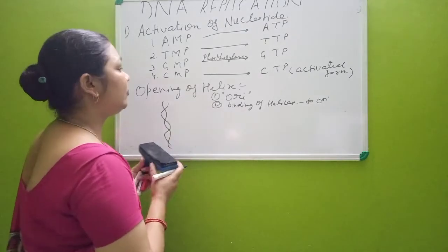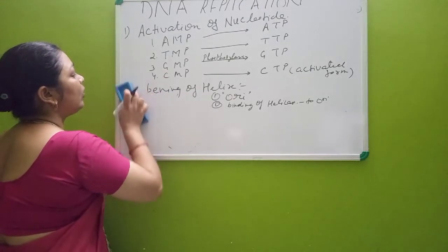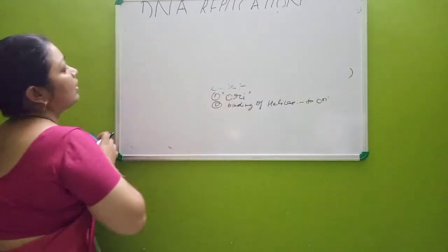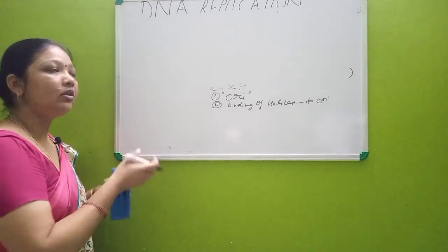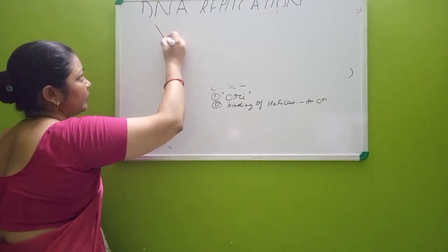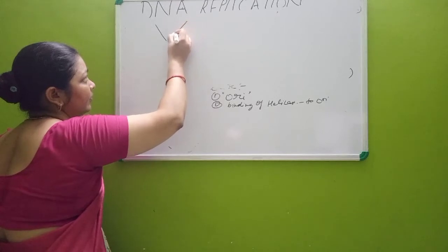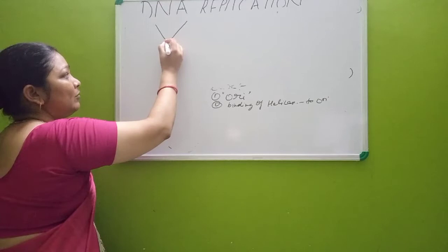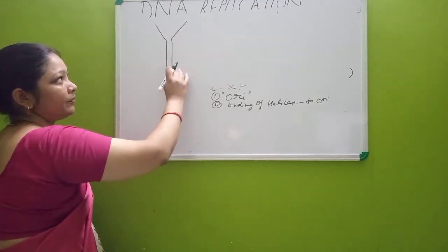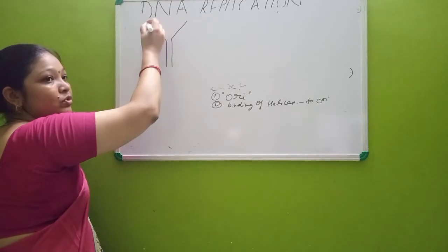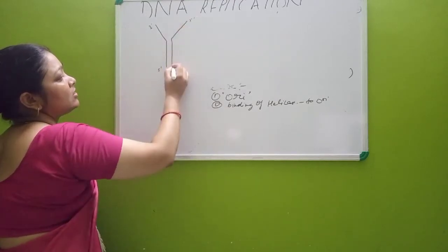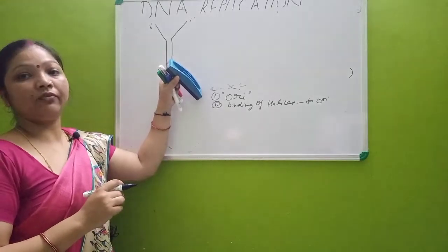After binding of helicase to ori, unwinding starts. The DNA begins to separate: one end is the three prime end and the other is the five prime end. The two strands of DNA get separated. This separated region forms a Y-shaped structure called the replication fork.